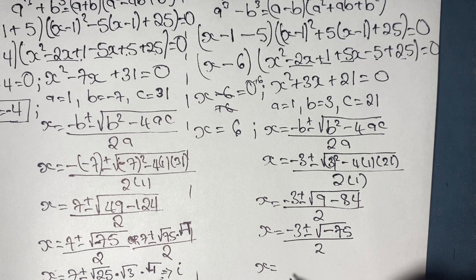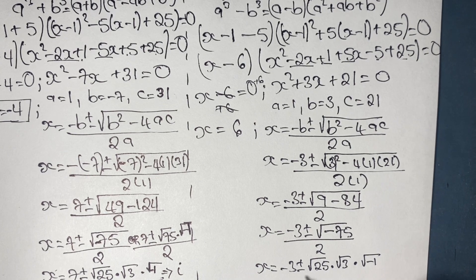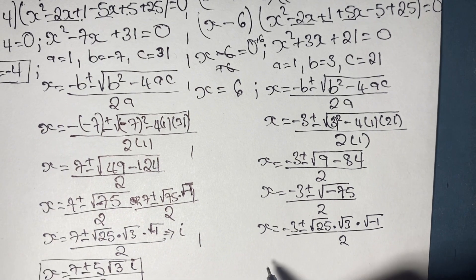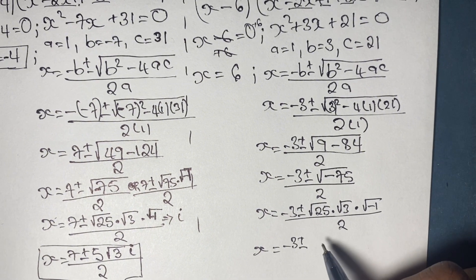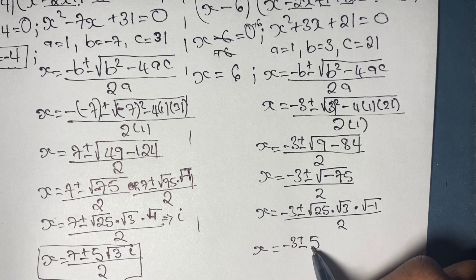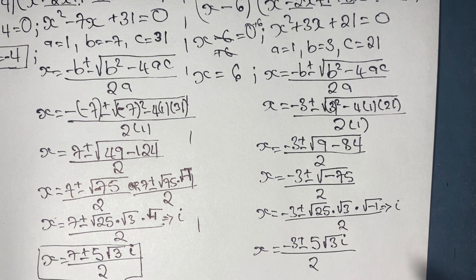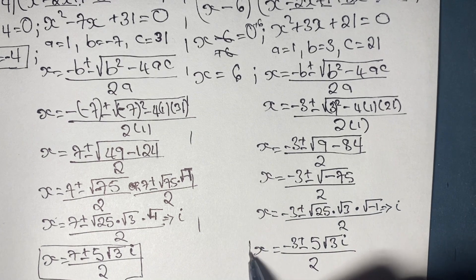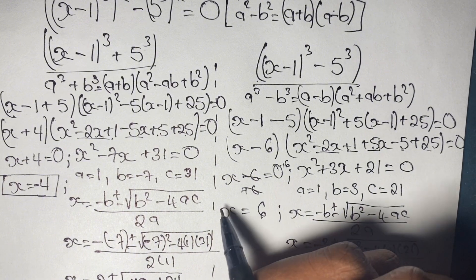Simplifying negative 75 the same way as before, we have x equals negative 3 plus or minus the square root of 25 times the square root of 3 times i, all over 2. This gives us x equals negative 3 plus or minus 5 times the square root of 3 i, all over 2, as our fifth and sixth solutions.